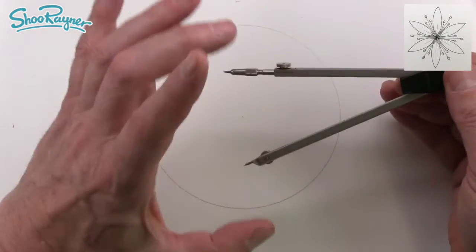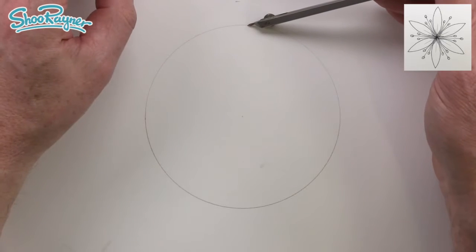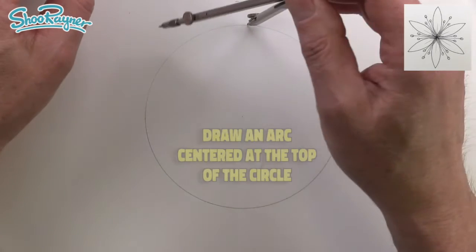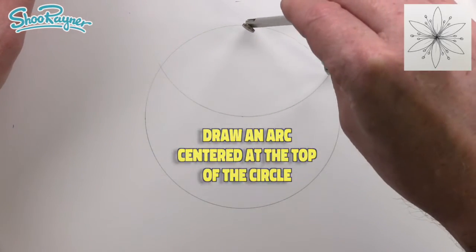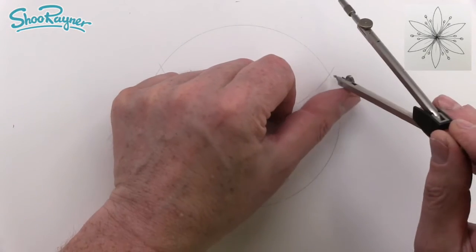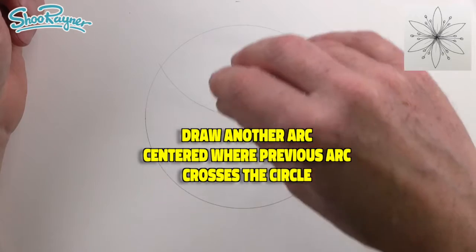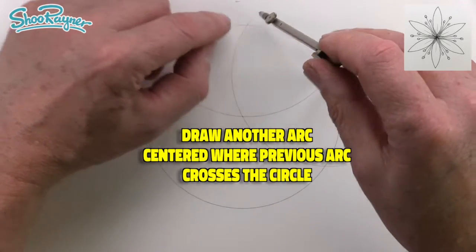Now keeping that radius, don't move this at all, this is the secret, this is sort of the magic part of it. Put your pin right in up at the top there and then we can draw a curve like that which crosses over and then we need to put the pin in exactly that point where it crosses over and then that will cross over where you were before.